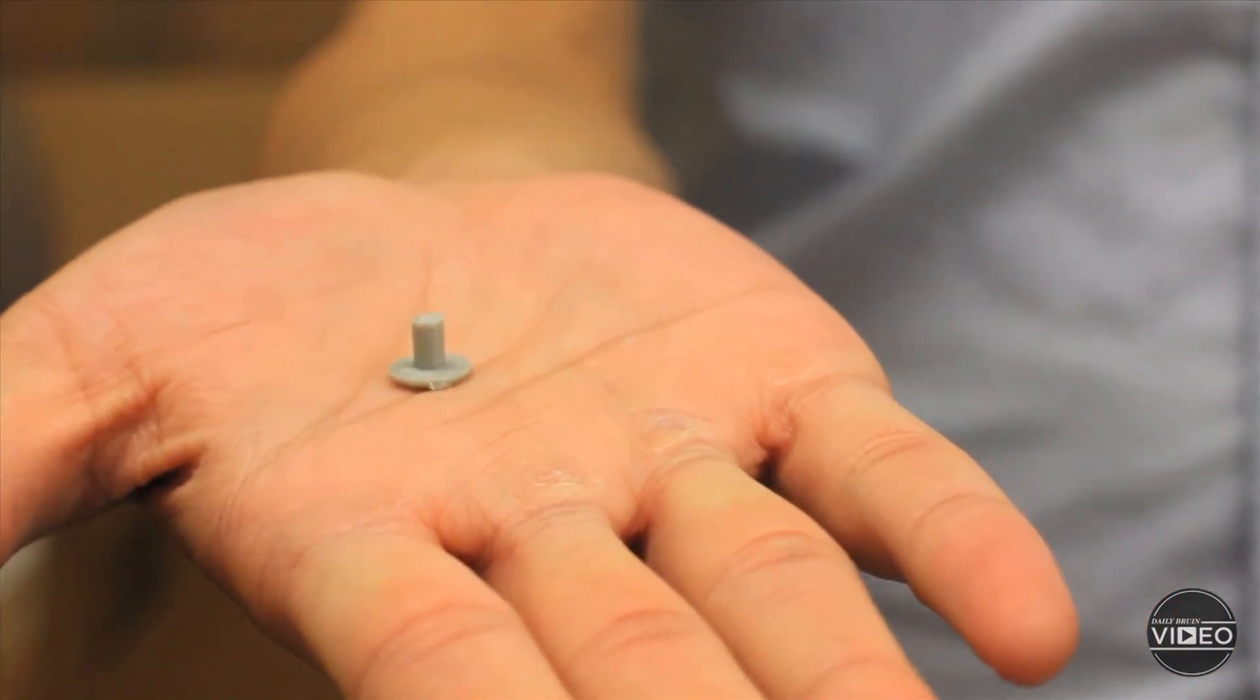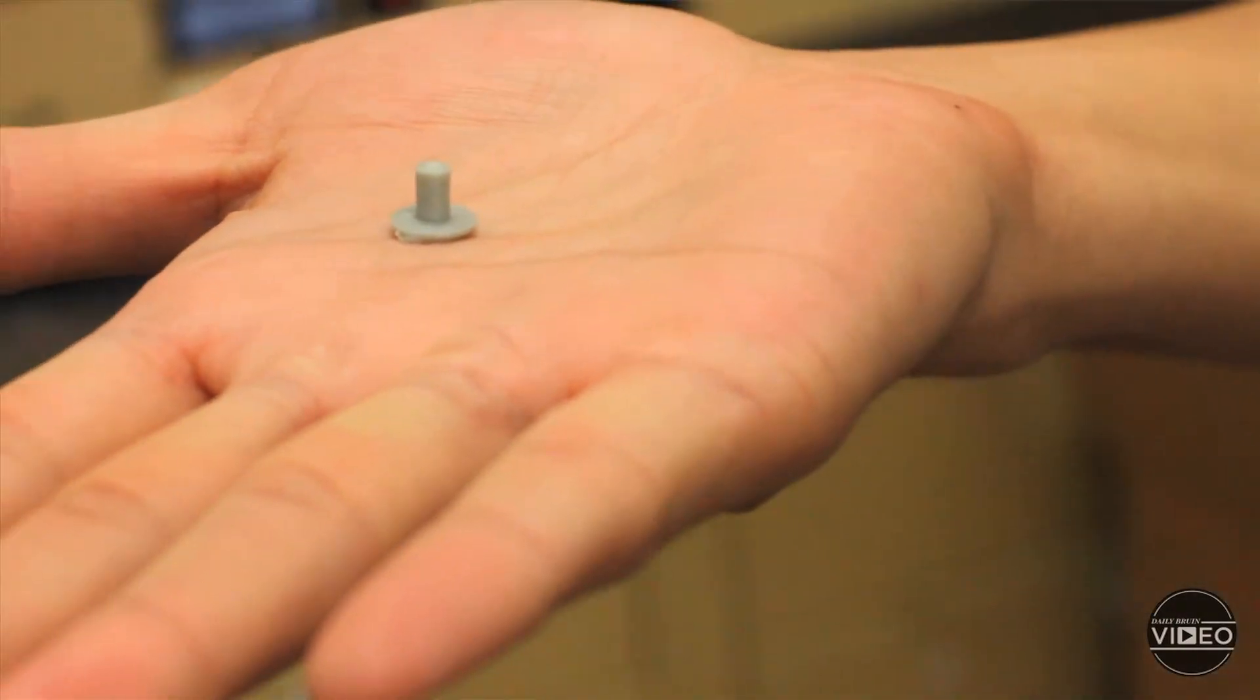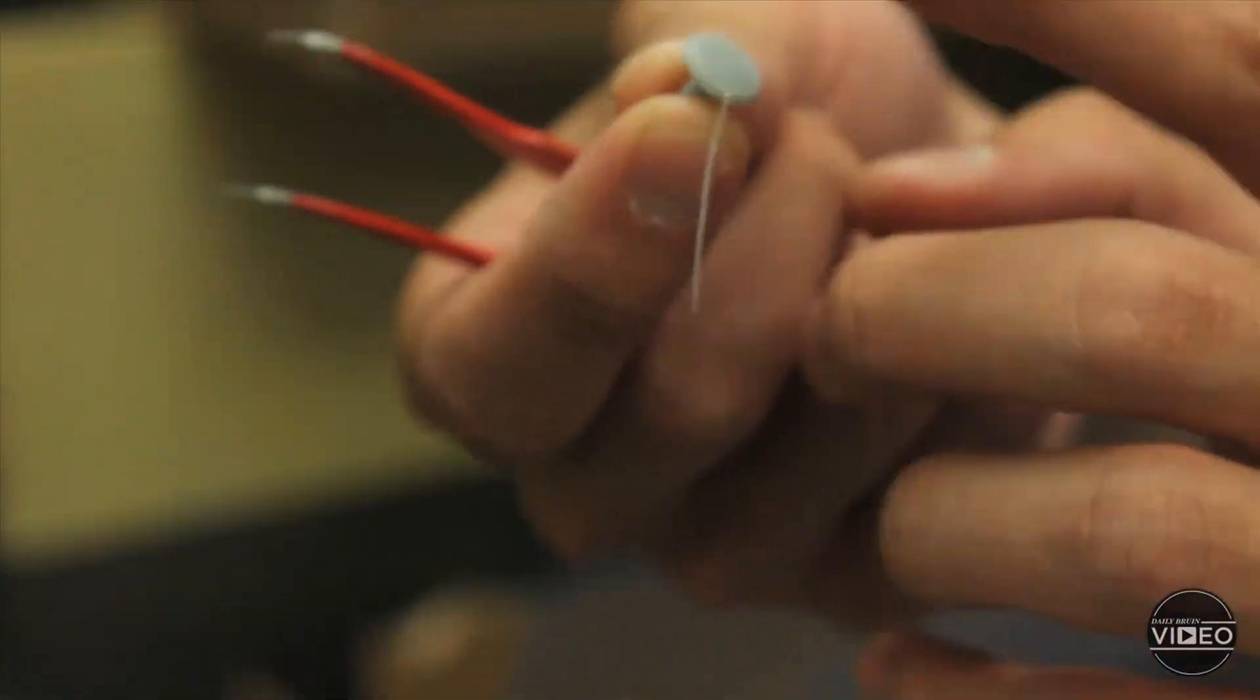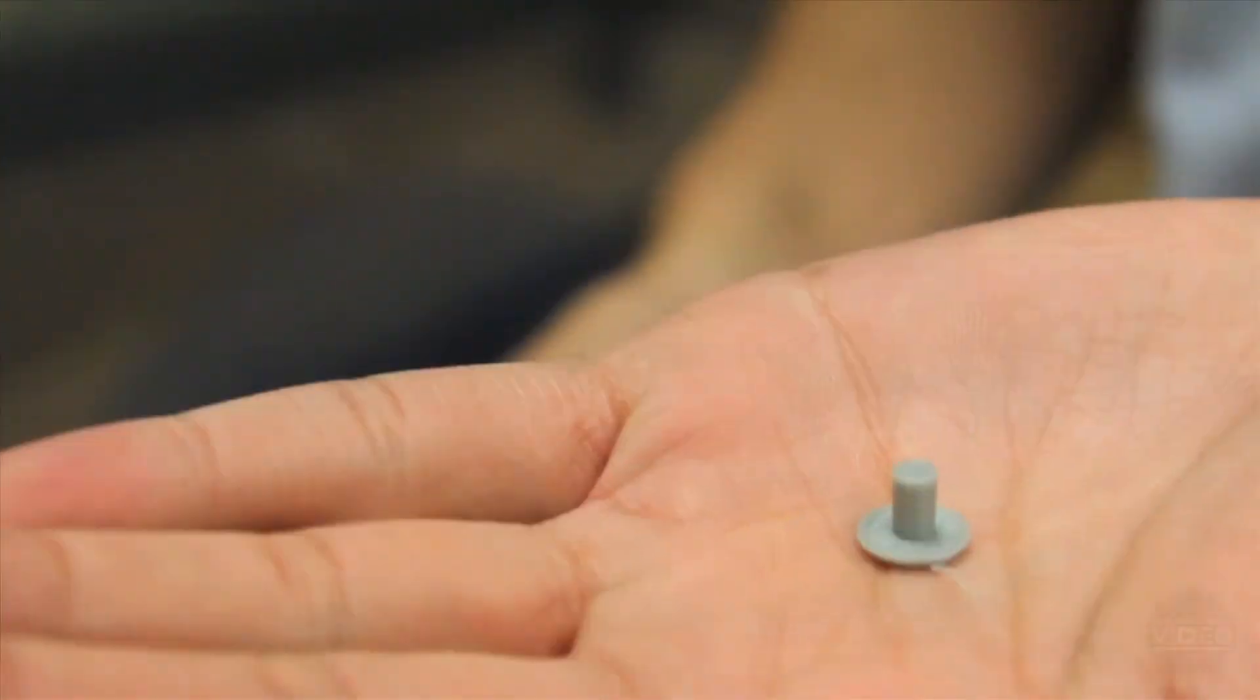This particular button is for a clock. It's supposed to basically have this button be what you push on, and then this rear side clicks on something else onto a circuit board or another sensor.